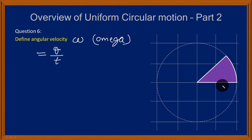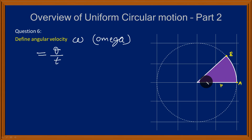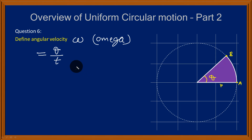What do I mean by this? Here, this object starts from point A, and after time T it is at point B. This radius has swept a given angle, theta, at the center of the circular path. So the rate at which this angle has been swept is what we refer to as angular velocity — it is the rate of change of angular displacement.